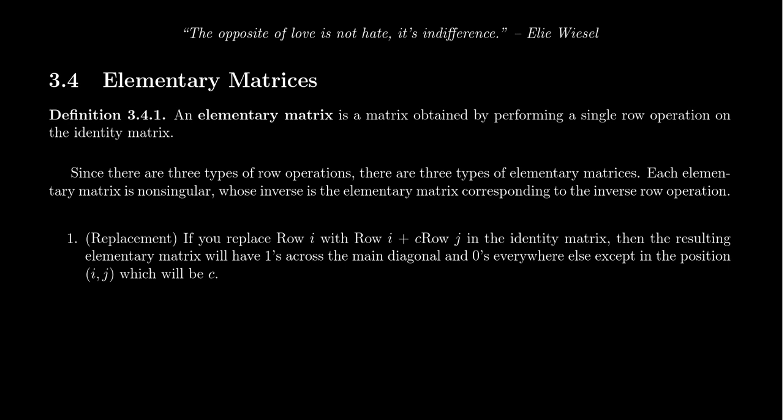An elementary matrix is a matrix obtained by performing a single row operation to the identity matrix. The identity matrix, of course, is the matrix with ones along the diagonal and zeros everywhere else. As there are three different types of elementary row operations — the replacement, the interchange, and the scaling operations — elementary matrices will come in one of three types in correspondence to those operations.